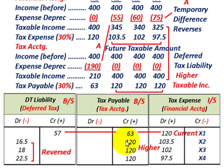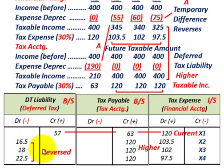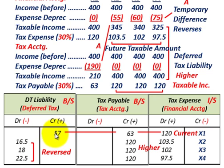For each of the next years, compare tax payable to tax expense. In year two, tax expense debit is $103,500 versus $120,000 tax payable, so we need a balancing debit of $16,500 to deferred tax liability — reducing it. The same happens in years three and four, debiting the deferred tax liability each year to reverse it. We started with a credit balance of $57,000 and it reverses out over the next three years until we reach a zero balance.